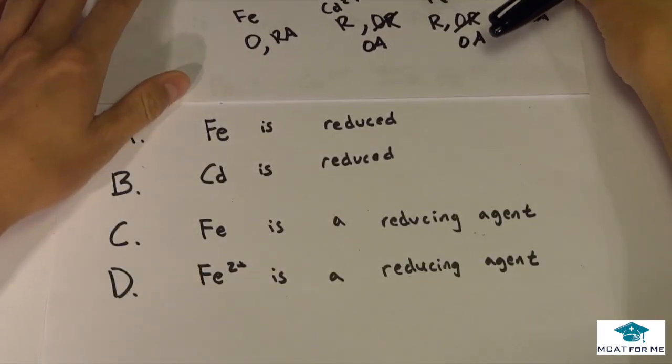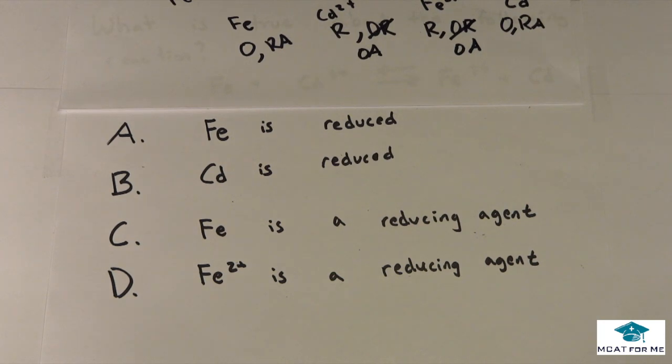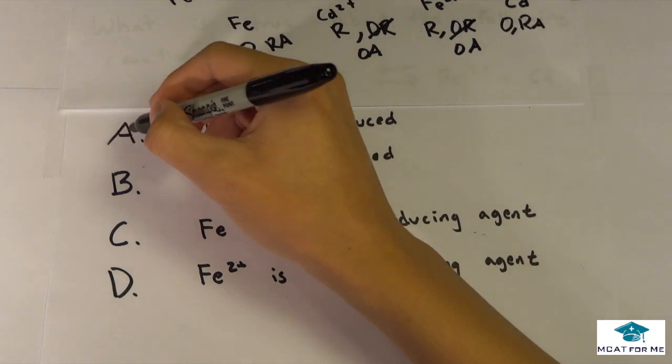So we'll look back up here and now we just have to match them, we just have to match which one is the case. So Fe is oxidized, it's not reduced, so we know that A is not true.